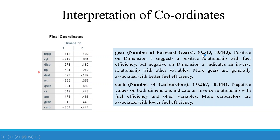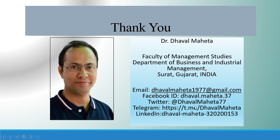Number of gears is positive on Dimension 1 but negative on Dimension 2, suggesting more gears are generally associated with better fuel efficiency. Carburetors are negative on both dimensions, indicating that more carburetors are associated with lower fuel efficiency and an inverse relationship with other variables on both dimensions.